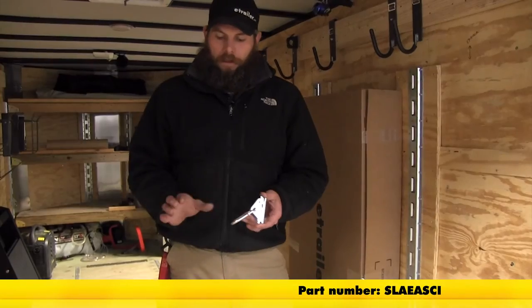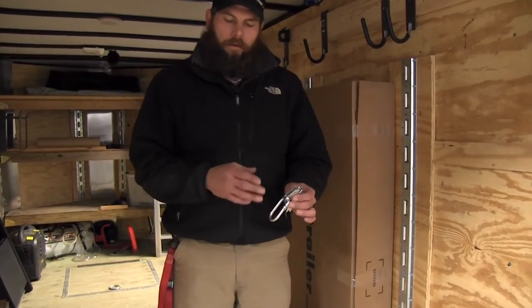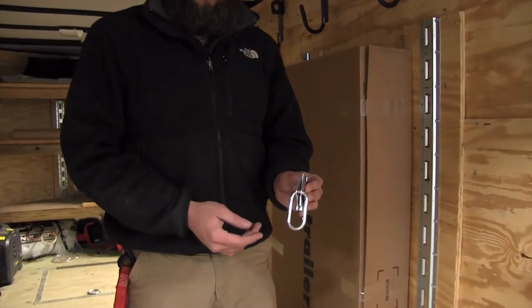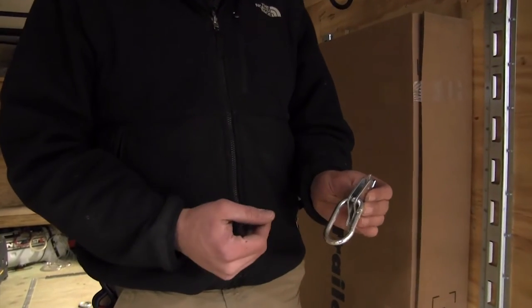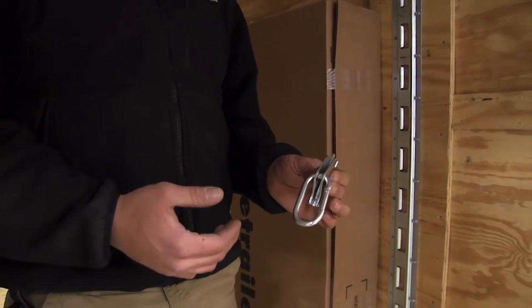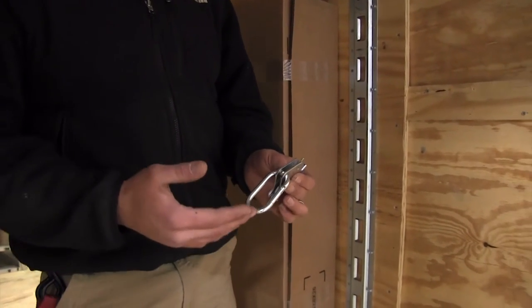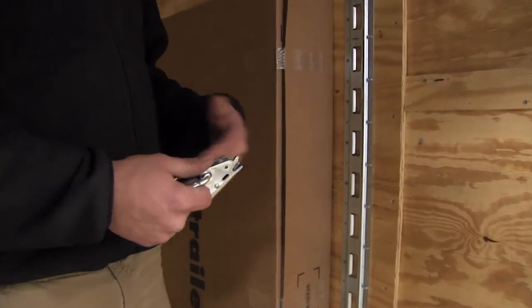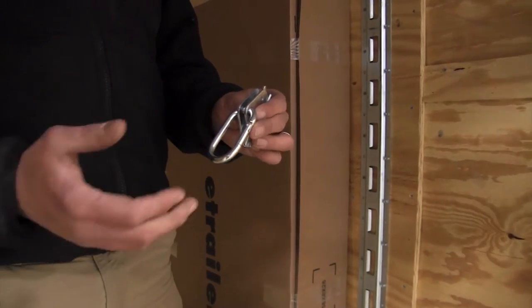Our E-Track connector with carabiner are perfect for taking care of those light duty cargo control situations. It's got that 300 pound capacity, so plenty for a lot of items we're going to have in our cargo carrier - appliances, furniture, antiques, things like that.